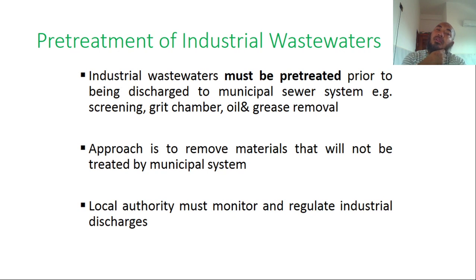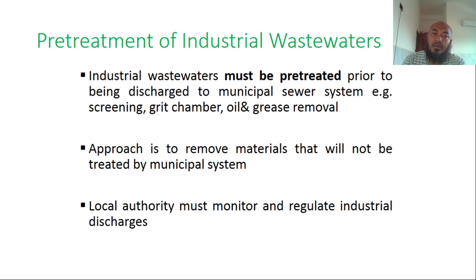For industrial wastewater, pre-treatment is usually required before disposal into the municipal sewer system. For example, screening or a grit chamber — these pre-treatment approaches remove material that will not be treated by the municipal system. The local authority must monitor and regulate industry discharge.